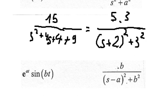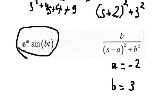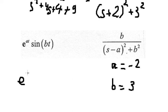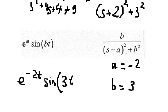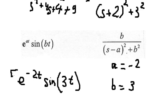Now we combine the formulas. We know that a equals negative two and b equals three. So the inverse Laplace gives us e to the power of negative two t times sine of three t. We also have the factor of five at the end, so the final answer includes a factor of five. This is the end — thank you for watching.